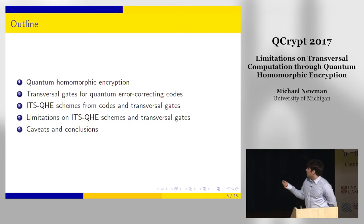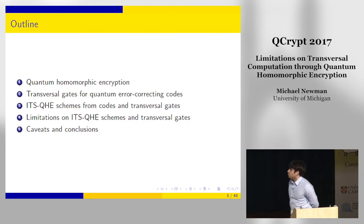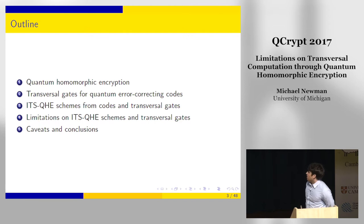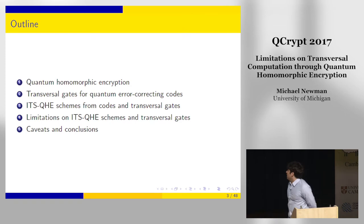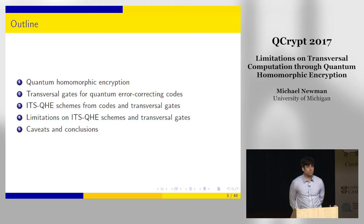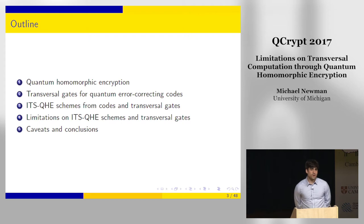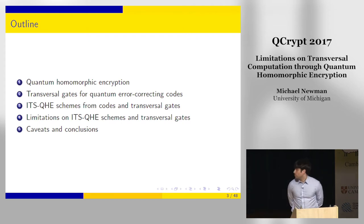As an outline: I'm going to define these unwieldy terms—homomorphic encryption and transversal gates for quantum codes. We'll link them via a homomorphic encryption scheme proposed by Ouyang, Tan, and Fitzsimmons in 2015, which relates homomorphic encryption to quantum codes and transversal gates. We'll then observe limitations on information-theoretically secure homomorphic encryption with quantum assistance, impose those limitations on transversal gate sets, and finally discuss caveats and future directions.